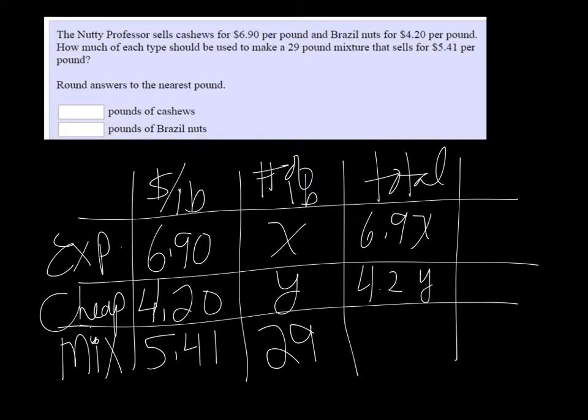And then if I multiply 5.41, the price of the mixture, times the 29 pounds that we're going to have, I get 156.89.